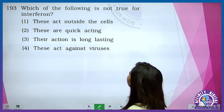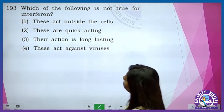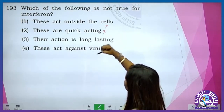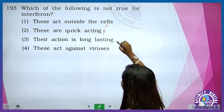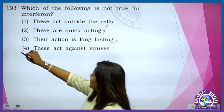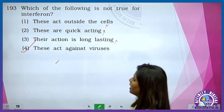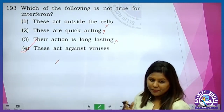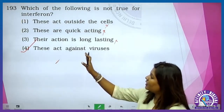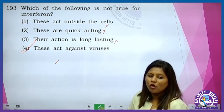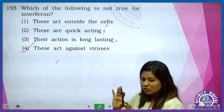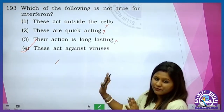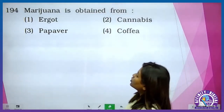Which of the following is not true for interferon? These act outside the body cell, these are quick acting, their action is long lasting, these act against viruses. Barrier method itna bhi long lasting nahi hota. It is not so long lasting or quick acting, lekin virus ke against effectively kaam karta hai.